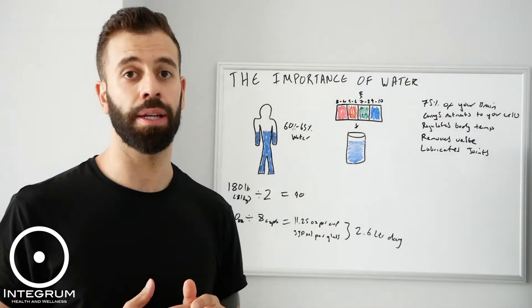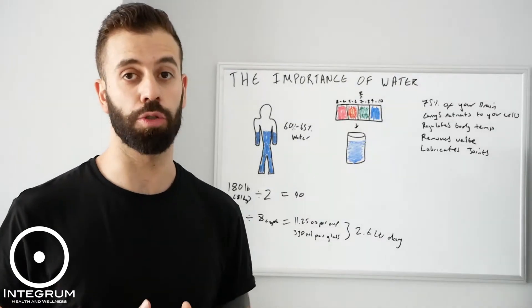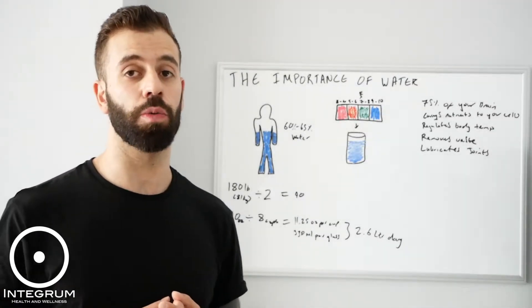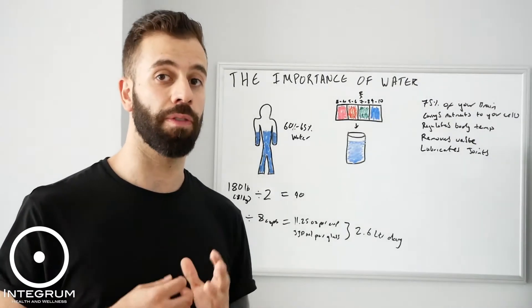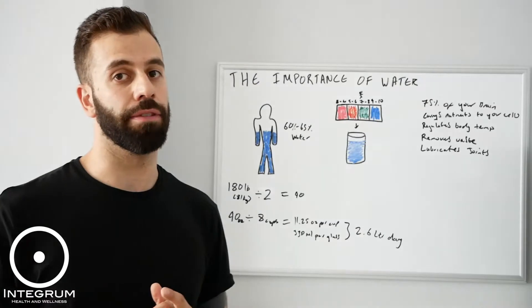This is why it's really important that something that we're consuming throughout the day, such as water, be edging towards alkaline. A slightly more alkaline water is going to help us achieve more of that balanced pH at the end of the day.